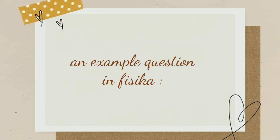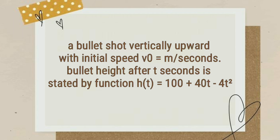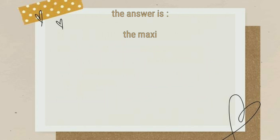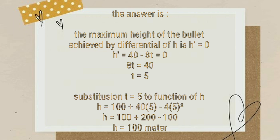An example question in physics: a ball is shot vertically upward with initial speed V0 meters per second. The height h at time t seconds is given by the function h equals 100 plus 40t minus 4t squared. The maximum height is achieved by differentiating h. h-prime equals 40 minus 8t equals 0, so t equals 5. Then substituting t equals 5 into h: h equals 100 plus 40 times 5 minus 4 times 5 squared equals 100 plus 200 minus 100. So h equals 200 meters.